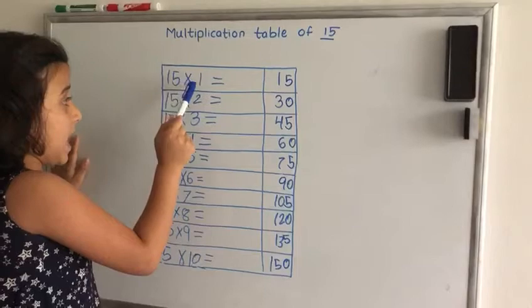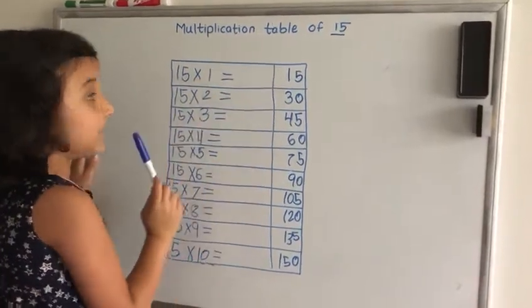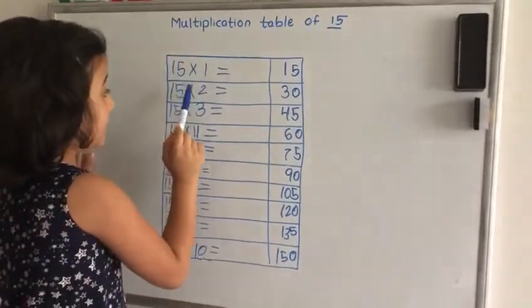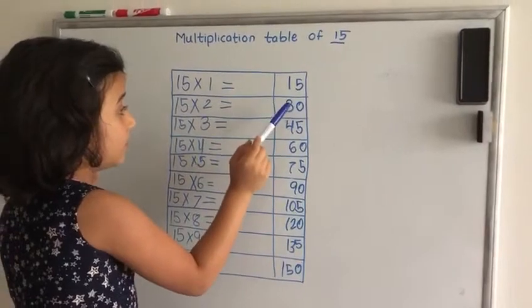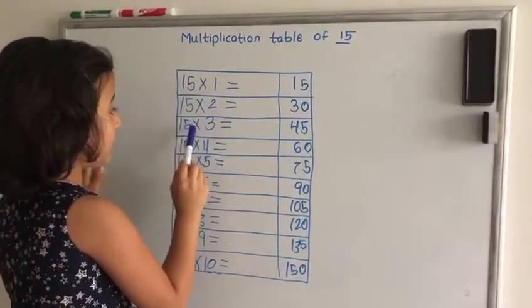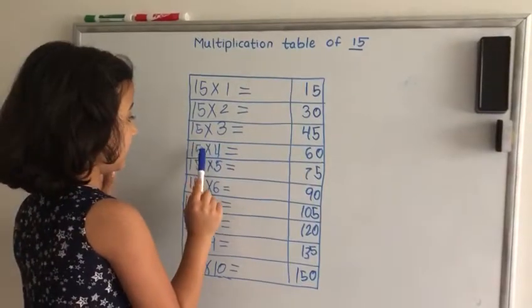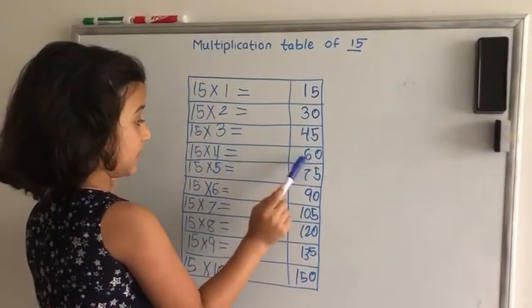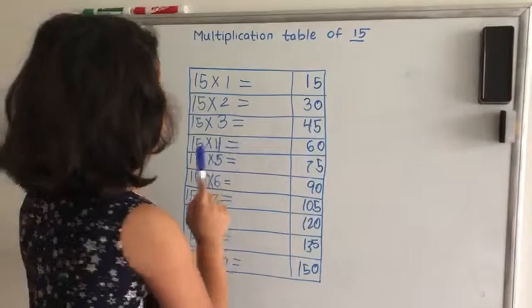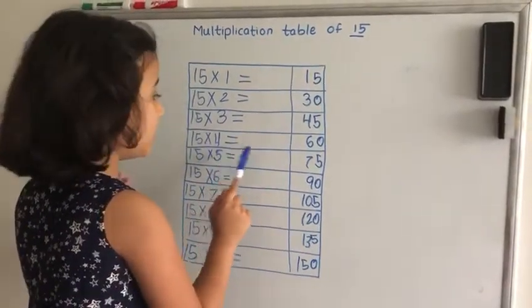15 times 1 equals 15. 15 times 2 equals 30, 15 times 3 equals 45, 15 times 4 equals 60, 15 times 5 equals 75.